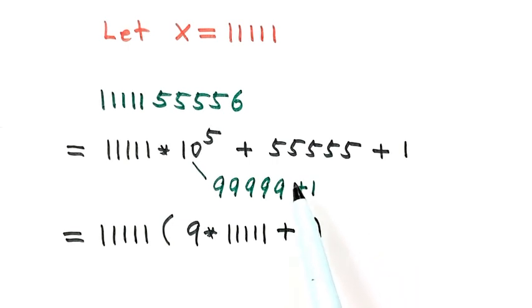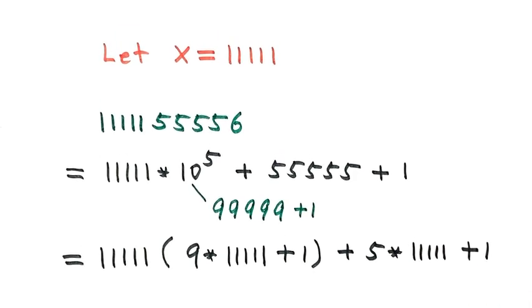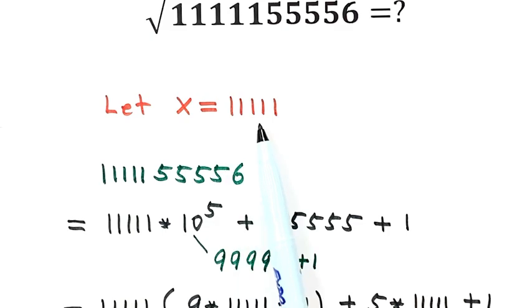For the five fives, we can write it as five times five ones, then plus one. So now we can use x for the five ones.